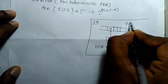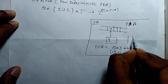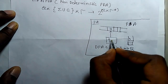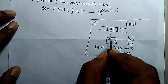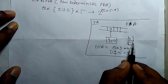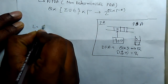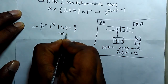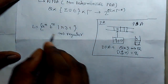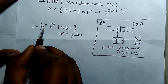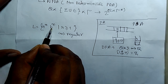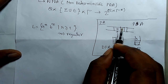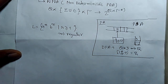In the pushdown automata (PDA), there is an extra memory that should be read by the finite control machine. That's why the language L equal to A^N and B^N such that N is greater than or equal to 1 is not regular. It is not regular because you require a memory that could count that the number of A's should be equal to the number of B's. This is not possible in finite automata — finite automata just take input and change the state; it cannot memorize anything about what happened previously.